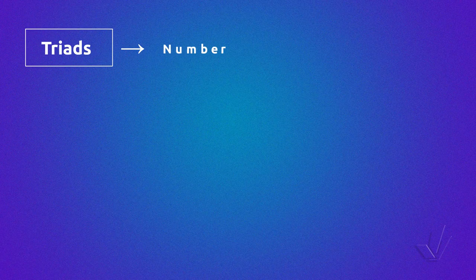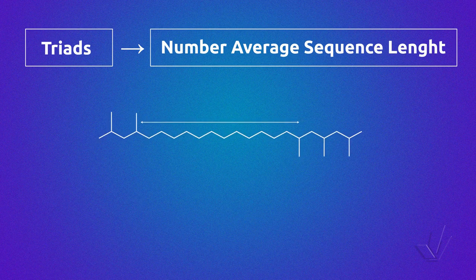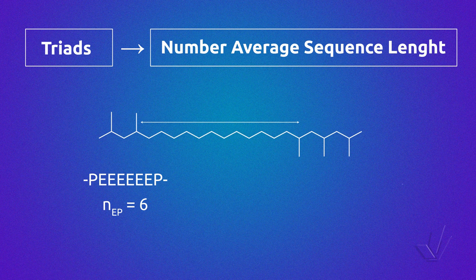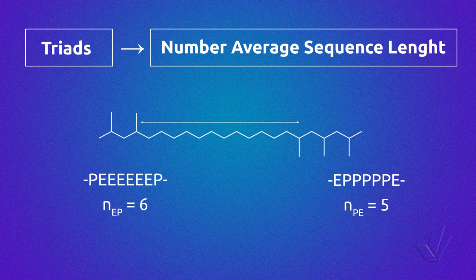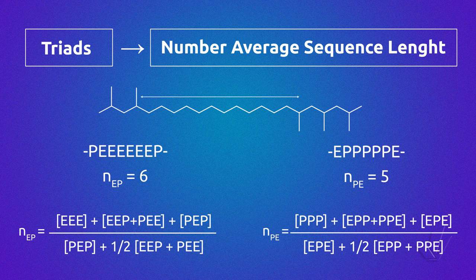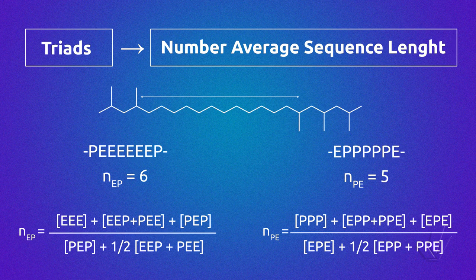That is called the number average sequence length. In the example shown here, there are six ethylene units between propylene units and five propylene units between ethylene units. The triad sequence can be related with the number average sequence length by the following equations. NEP is the number of ethylene units between P units, related with triads centered in ethylene. The other equation shows the number of sequences of propylene between ethylene units, NPE, related with triads centered in propylene units.